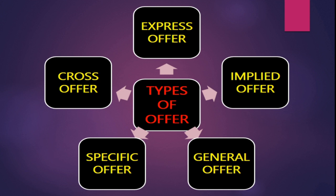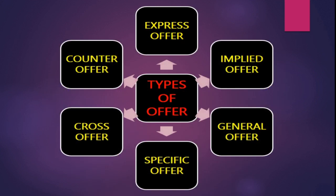The final type is counter offer. For example, Mr. A writes to Mr. B saying 'I want to sell my house to you for rupees one crore.' Mr. B writes back saying 'I accept your offer for rupees ninety-five lakhs — can you accept?' These are the various types of offer. Thank you for watching this video.